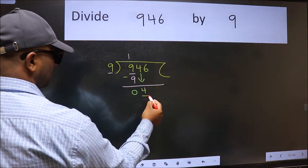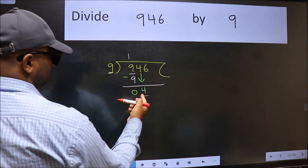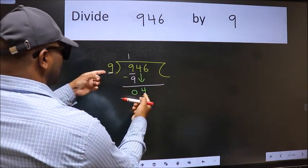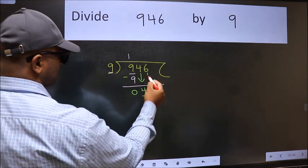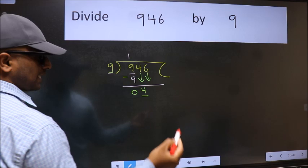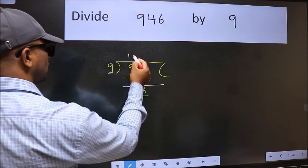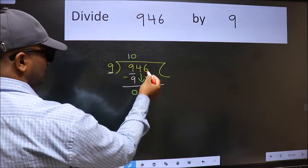Now here we have four and here nine. Four is smaller than nine, so we should bring down the second number. The rule to bring down the second number is we should put zero here, then only we can bring this number down.